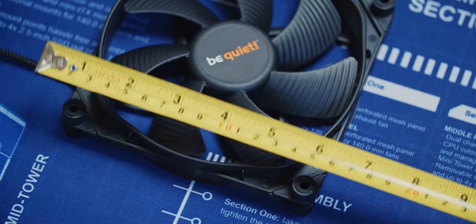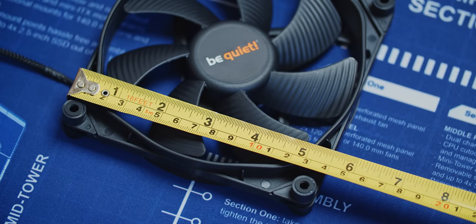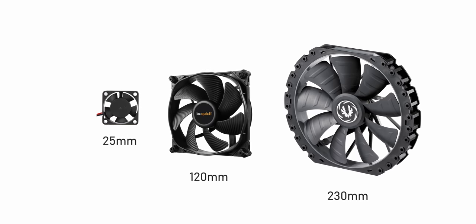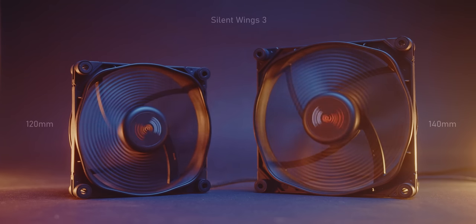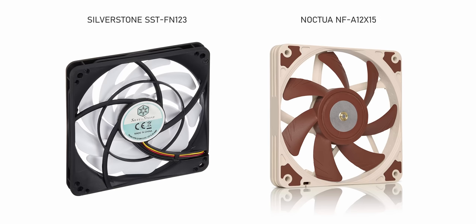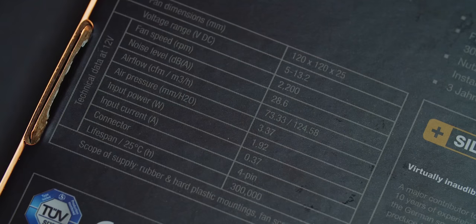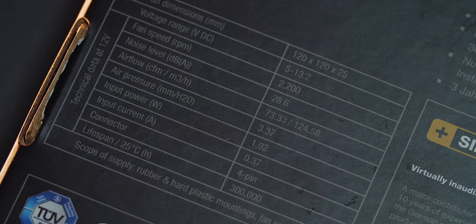The first quick specification is size, which is the measurement of the frame in millimeters — not the blades — ranging from really tiny 25mm fans all the way up to 230mm fans, with 120mm and 140mm sizes being the most commonly used on cases and coolers. The default thickness is 25mm, which is fine for most situations, but be mindful there are low-profile fans for small form factor builds. All specifications on the box are measured at maximum RPM.